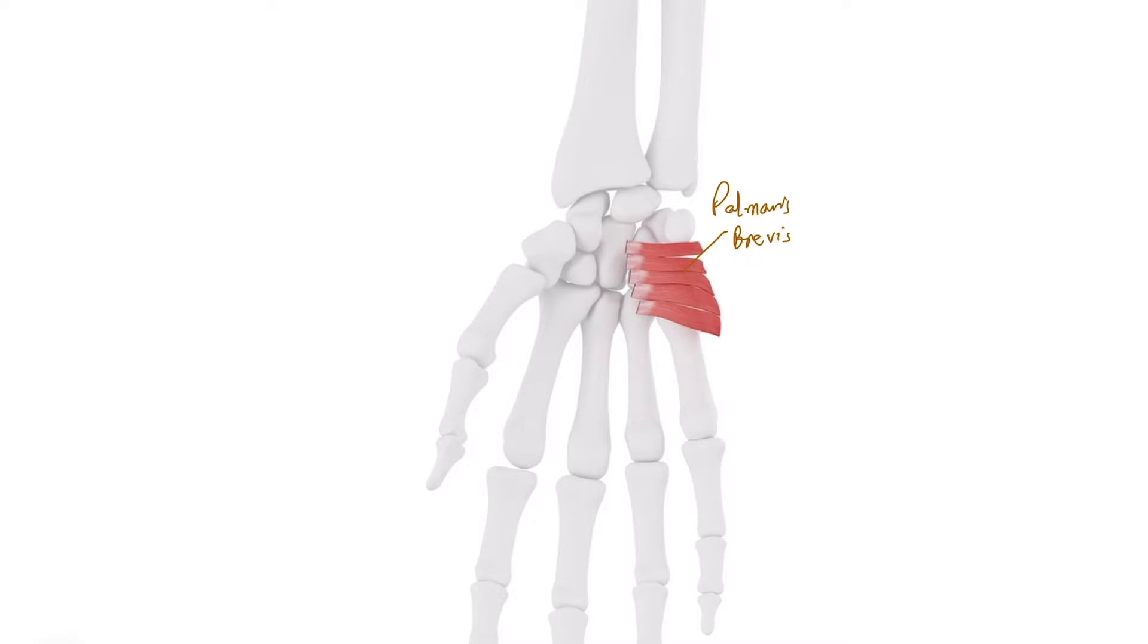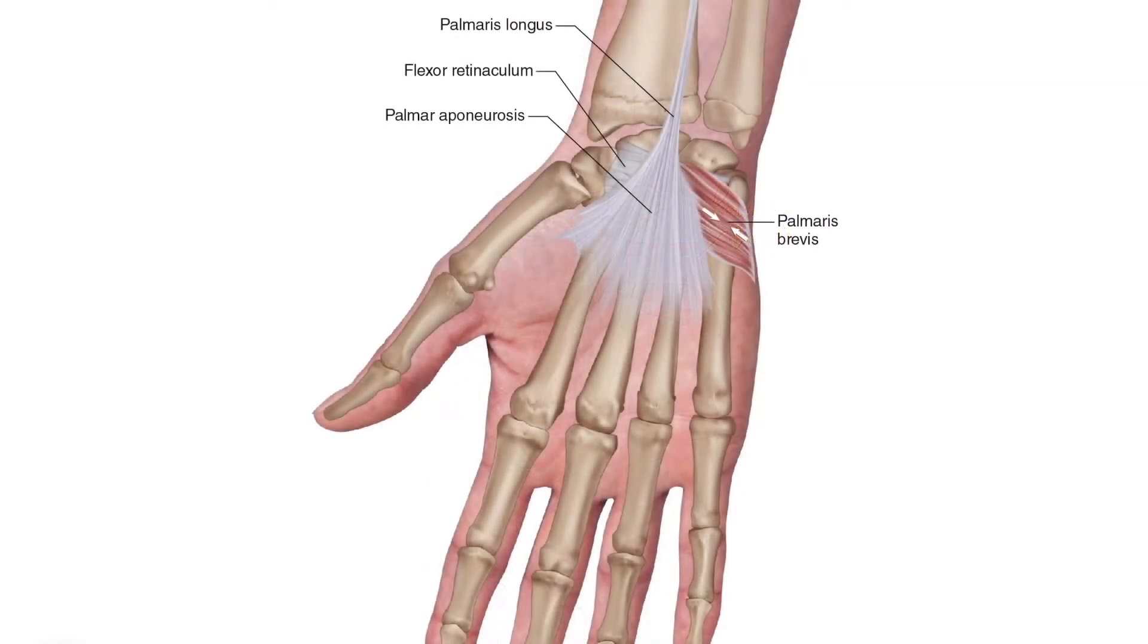Here you can see in this image, this is palmaris brevis. It is attached to the palmar aponeurosis on one side, and on the other side it is attached to the skin, the dermis of the skin on the ulnar border of the palm.